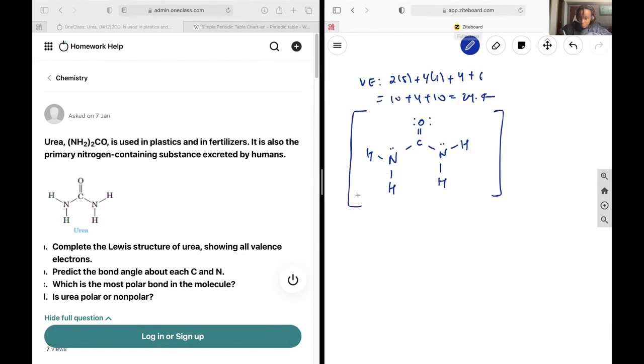Next up, we want to predict the bond angle about each carbon and nitrogen. So first we need to find out the hybridization for each of our groups here, so we can figure out its geometry.